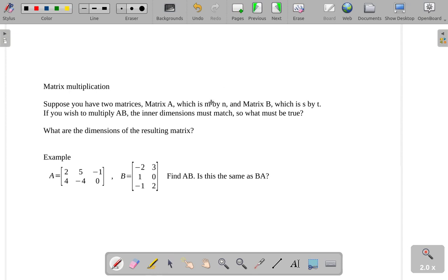So if we have matrix A, I'm going to call this an M by N matrix, and matrix B, which is an S by T matrix. If you wish to multiply them so that you're doing A times B, then the inner dimensions must match.